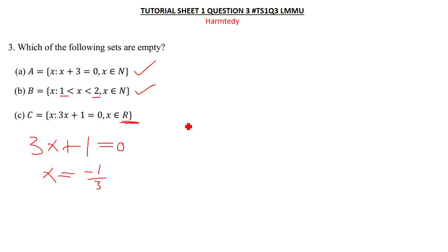If this is a member of real numbers, then this is not an empty set. Hence, this is not an empty set. So the only empty sets that we have are this and that. This one is not an empty set.